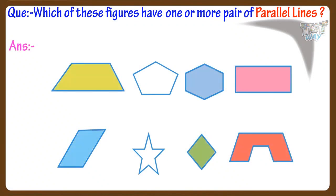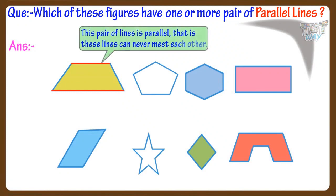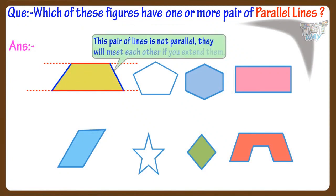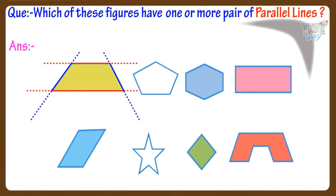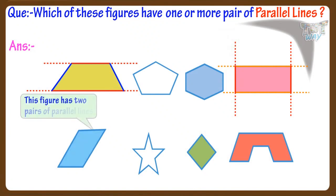This figure has a pair of parallel lines. These lines are parallel — they can never meet each other, no matter how long we extend them. And this pair of lines is not parallel; they will meet each other if you extend them. This figure has two pairs of parallel lines. This figure also has two pairs of parallel lines.